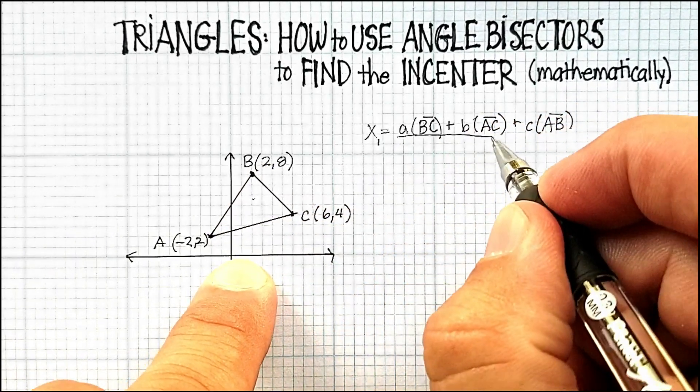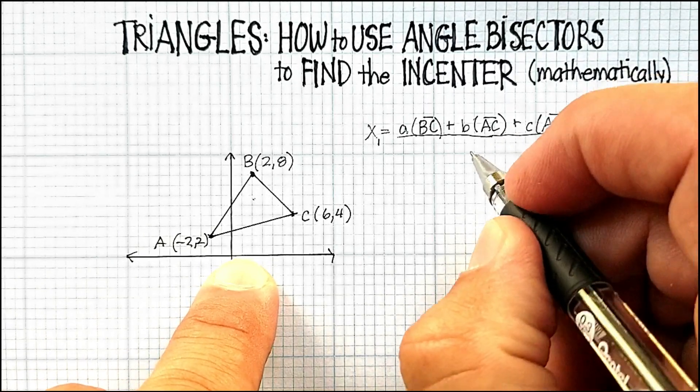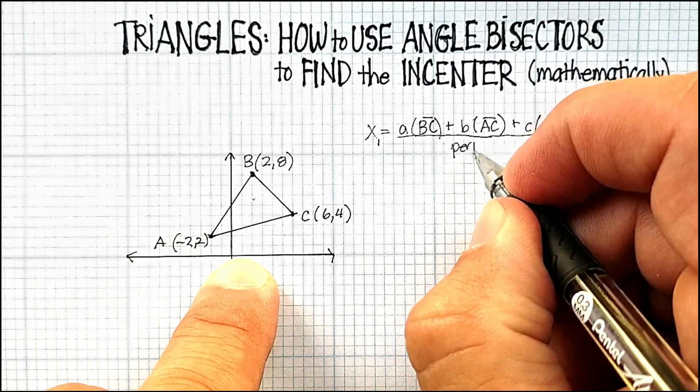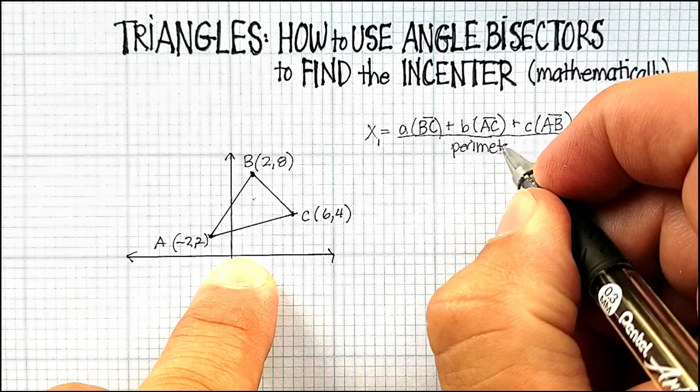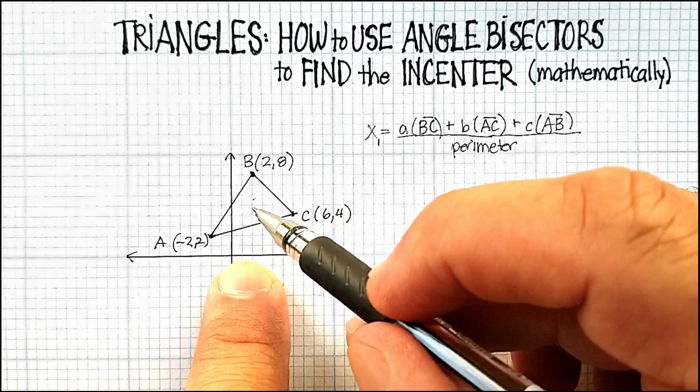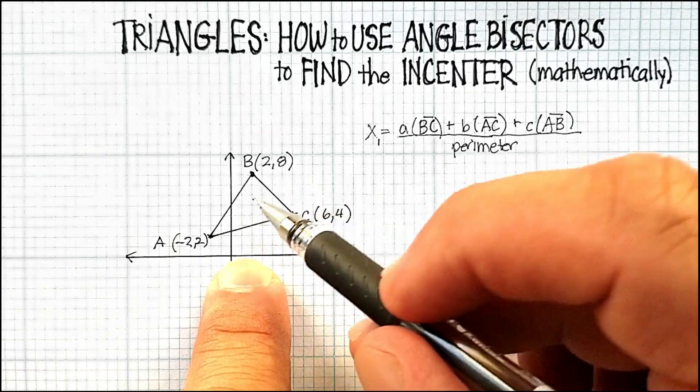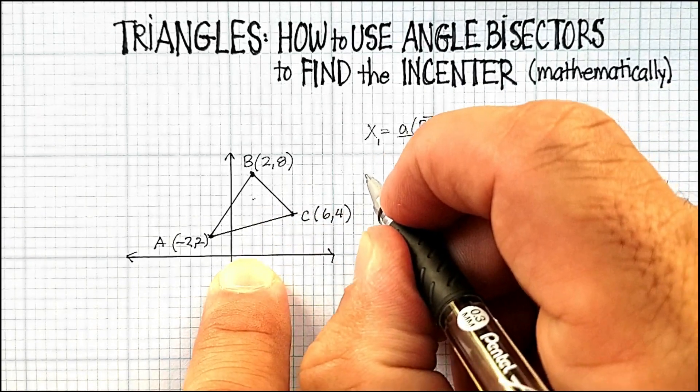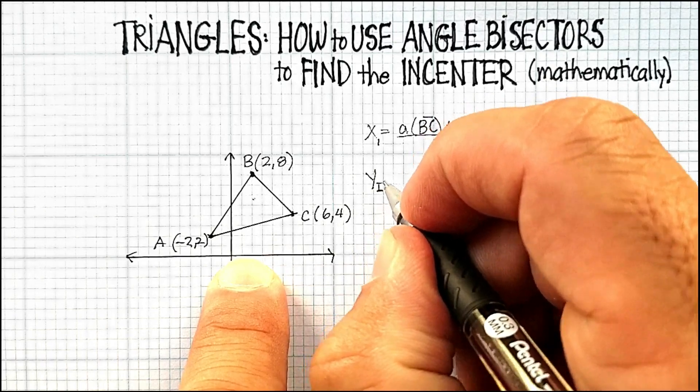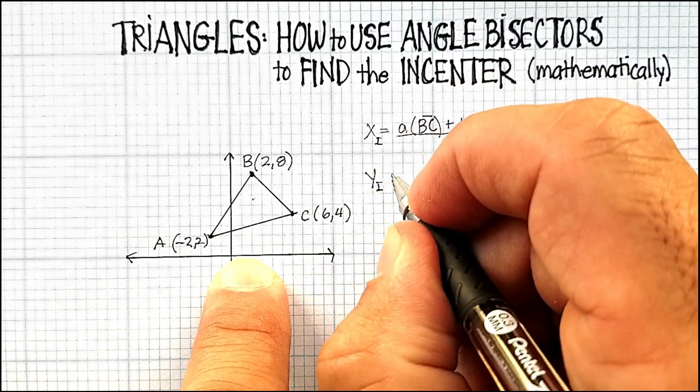So let me just go ahead and draw that line, divided by the perimeter. That would be the x coordinate, the x point for the coordinate in the middle. And we do the same thing with the y. The y of the incenter is going to be equal to the y value here.